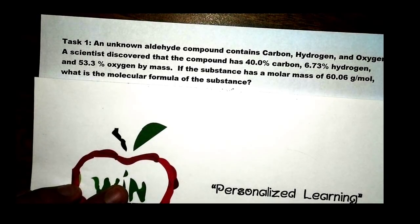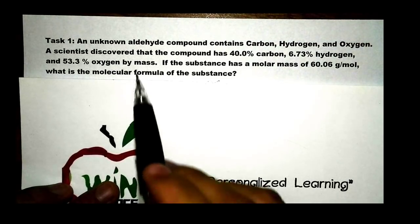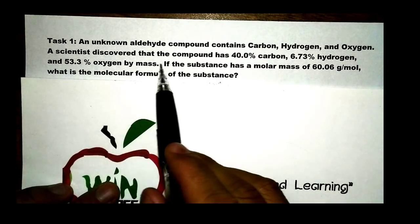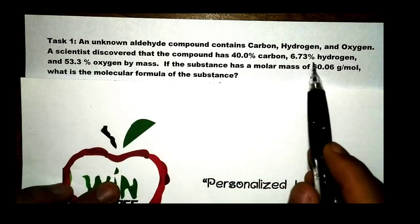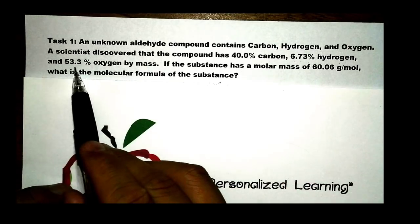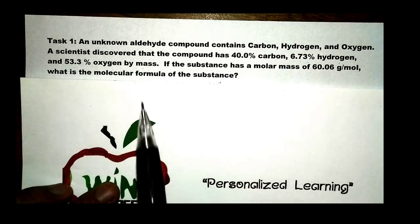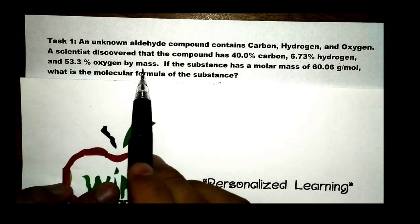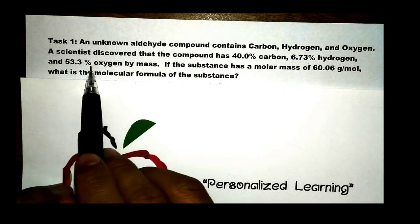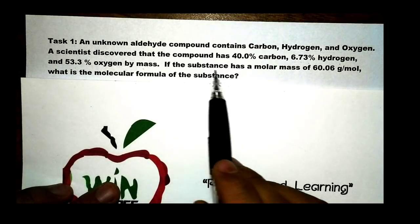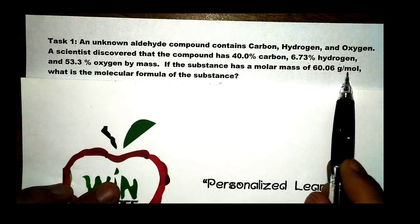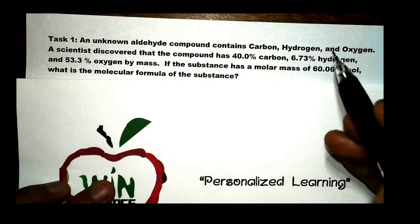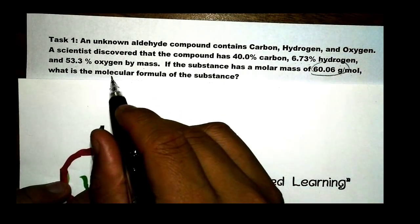Let's try a sample problem. We have an unknown aldehyde containing carbon, hydrogen, and oxygen. A scientist discovered the compound has 40% carbon, 6.73% hydrogen, and 53.3% oxygen by mass. We are not given the empirical formula directly, but we are given percent by mass. If the substance has a molar mass of 60.06 g/mol, what is the molecular formula? That molar mass is the molar mass of the molecular formula.